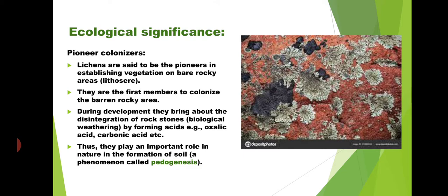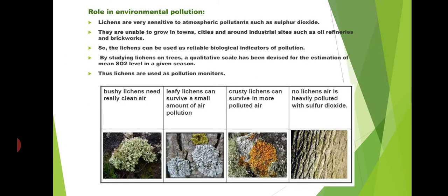This corrosion leads to the formation of soil — that is pedogenesis. Pedogenesis is soil formation, and it is the most important economic use of lichens. Lichens help in biological weathering and thereby bring about pedogenesis, the formation of soil.